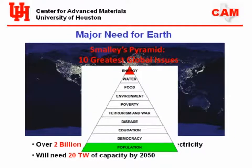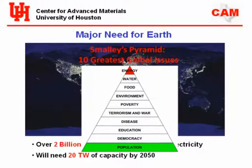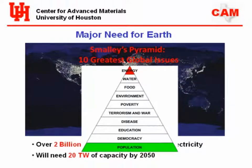Rick Smalley was a Nobel laureate at Rice University. He was, in fact, one of the discoverers of Buckyballs, he and Curl and Kroto. In his later years, Rick was interested in large projects — what are the global issues? If you look at those global issues, you start at the bottom with population, democracy, education. At the top of the pyramid is energy as the principal global issue, in Rick Smalley's mind. And I actually agree with that because we worked together on this project.